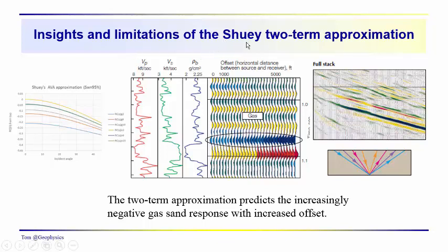We're going to take a closer look at the Shuey two-term approximation. As a review, we noted that there are some classes of AVO anomalies. This anomaly here is a reflection from the top of a gas sand, and it starts off negative, but it gets increasingly negative as the offset increases. That's the key idea in looking at amplitude variations with offset.